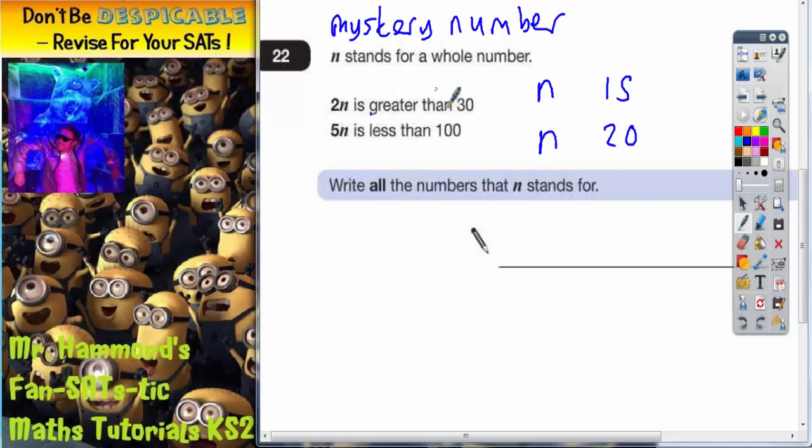If 2N is greater than 30, we just need to say on this top statement that N must be greater than 15. And on the bottom statement, 5N was less than 100, so N must be less than 20. So all we're looking for now is what numbers are greater than 15 but less than 20.